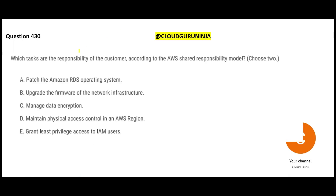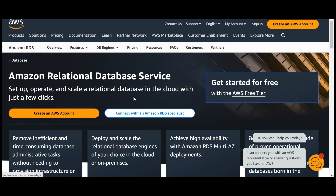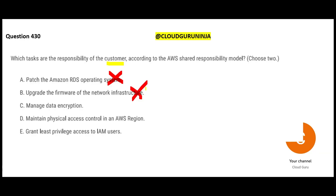Let us look at this question: which tasks are the responsibility of the customer as per the shared responsibility model? Option A is wrong because this is taken care by AWS - you do not have an opportunity to patch the operating system because RDS is a managed service, meaning AWS takes care of managing and provisioning the infrastructure. Option B is wrong because you as an AWS customer do not have access to the infrastructure - the cables connecting the networks.